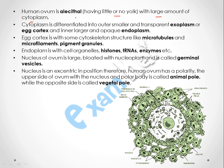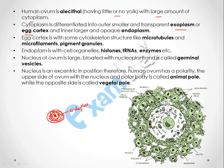Alecithal means the ovum does not have yolk or has a very little amount of yolk, but has a large amount of cytoplasm. The cytoplasm is differentiated into two parts: the outer one, which is smaller and transparent, called the exoplasm or egg cortex; and the inner one, which is large and opaque, called the endoplasm.